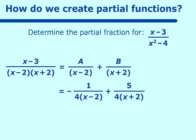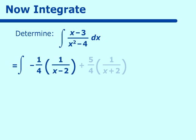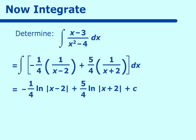Now let's integrate. We have the integral of x minus 3 over x squared minus 4 dx. Using our partial fractions, this becomes the integral of negative 1 fourth times 1 over (x minus 2), plus 5 fourths times 1 over (x plus 2), dx. The integration is then quite simple: negative 1 fourth ln of |x minus 2| plus 5 fourths ln of |x plus 2|, plus a constant.